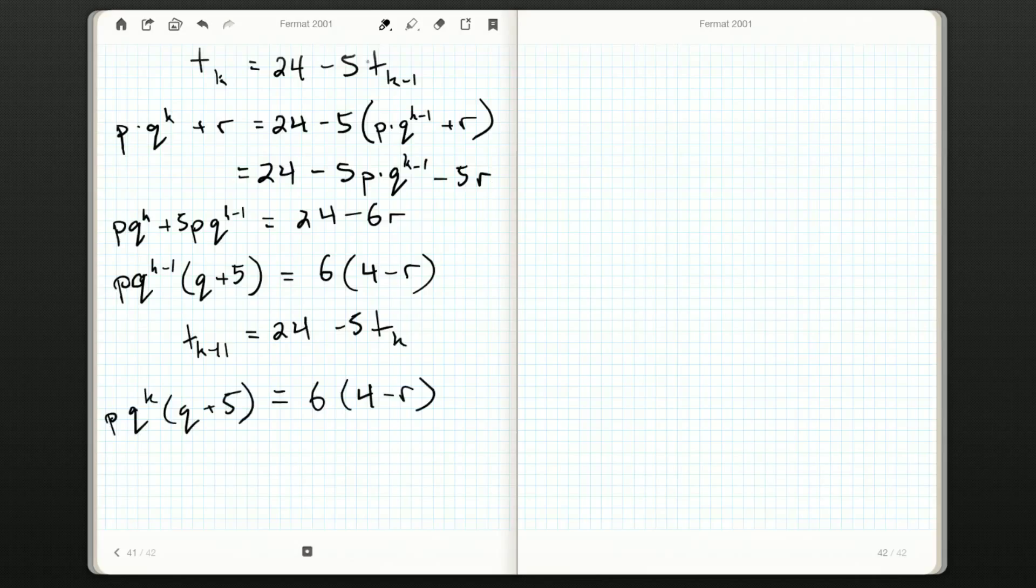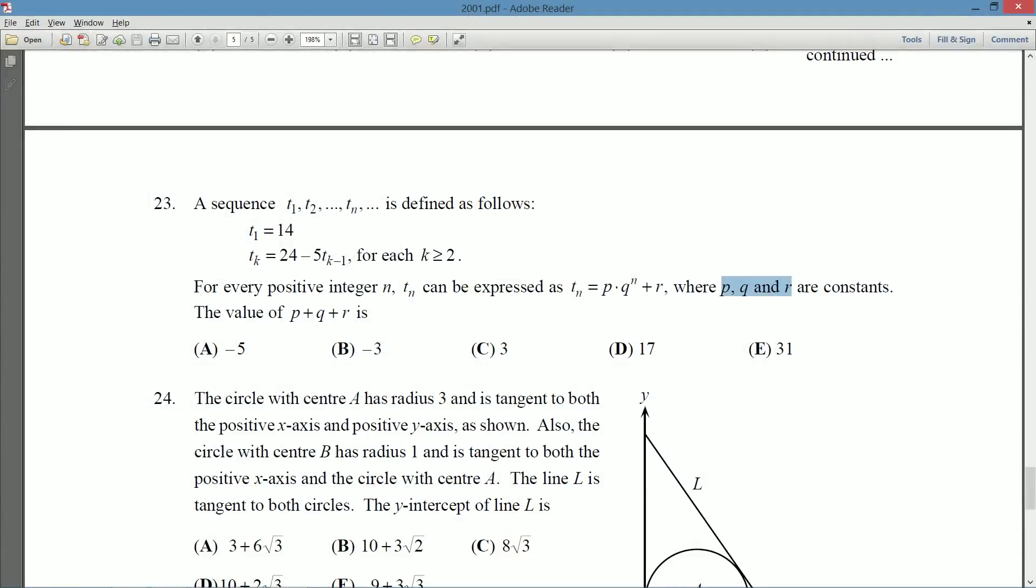But now look here. I've got these constant terms here are going to be the same. But I've differed by a factor of q. So, what I'm trying to say is both of these equations have to be 0. Which should tell me that r is 4 and that q is negative 5. Okay. But let's see if we can actually show that. Well, these guys are going to be equal. So, we've got p q to the k minus 1 q plus 5 is equal to p q to the k q plus 5. Okay. Now, are we told anything about p and q? Can I just, p q and r are constants. Okay. Now, we know that p and q can't be 0. Because if either one of them are 0, then every t n would just be r.